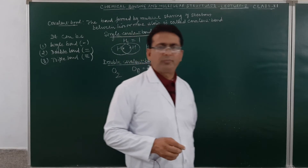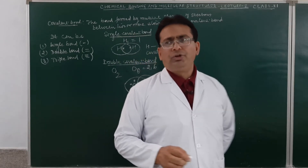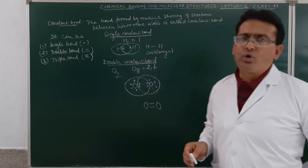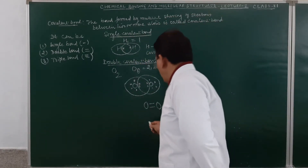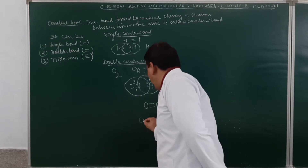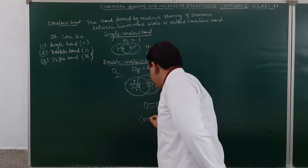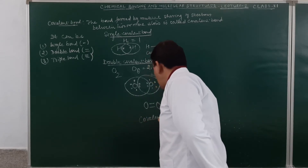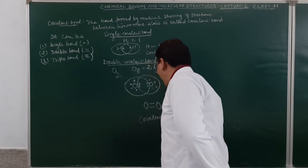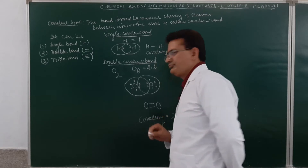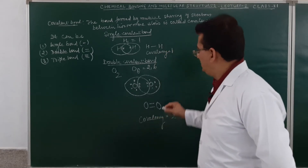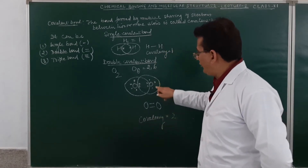So what is a covalent bond? The bond which is formed by the mutual sharing of electrons between the two combining atoms is called a covalent bond.